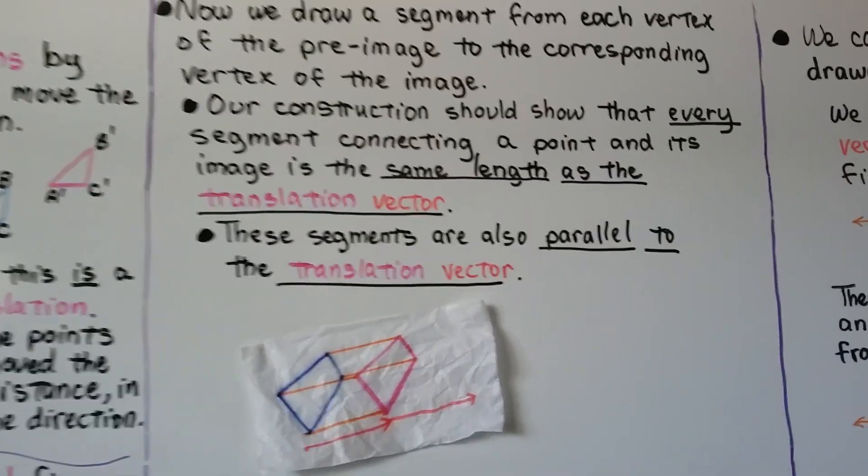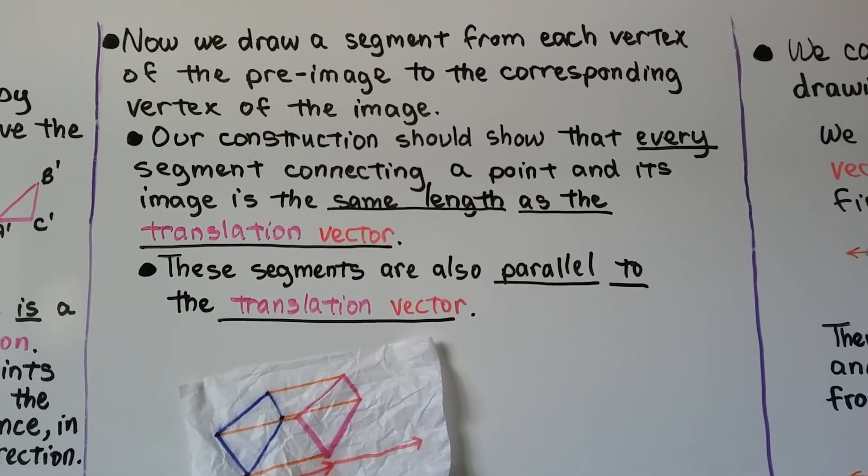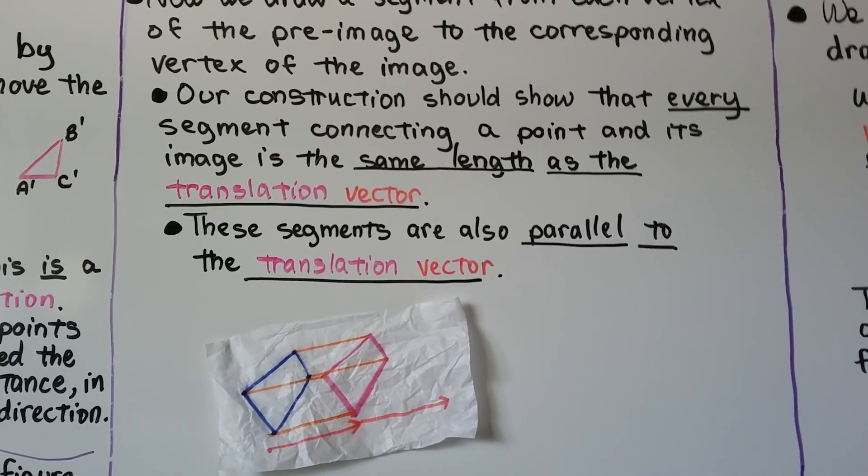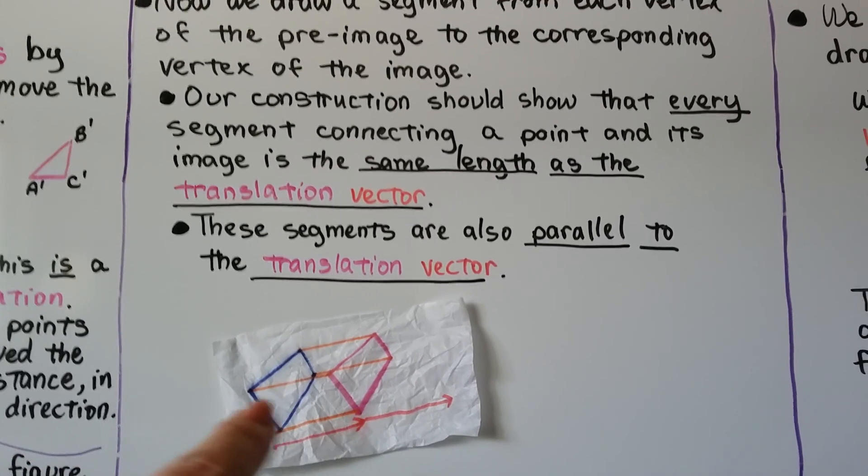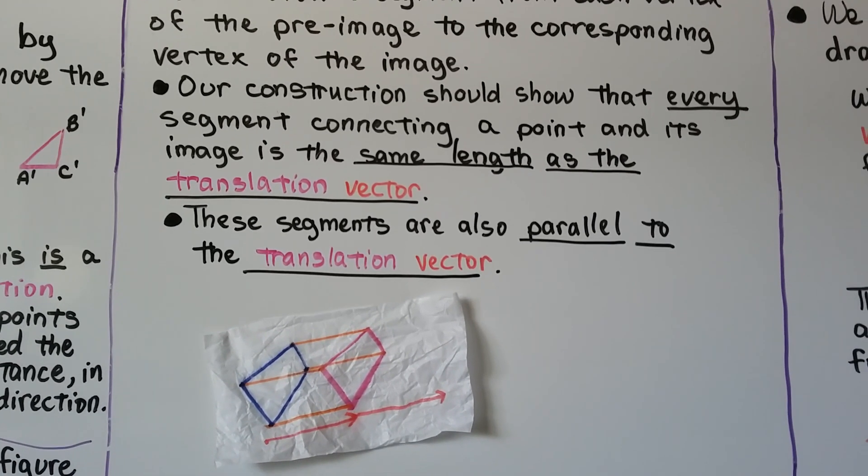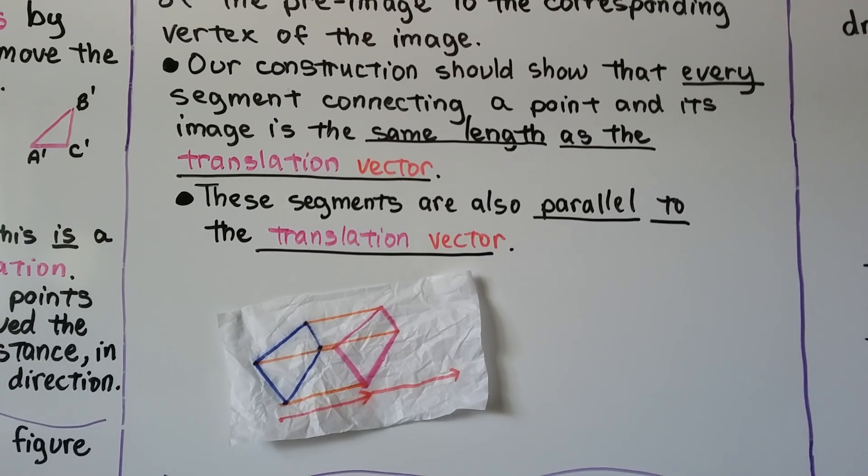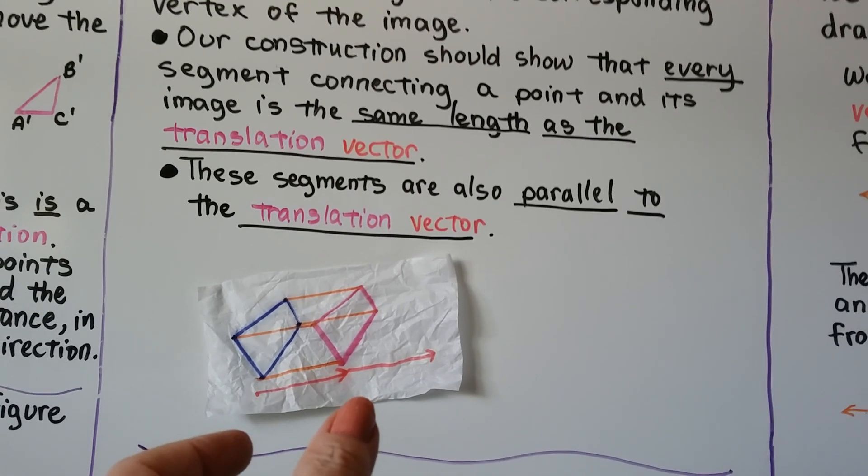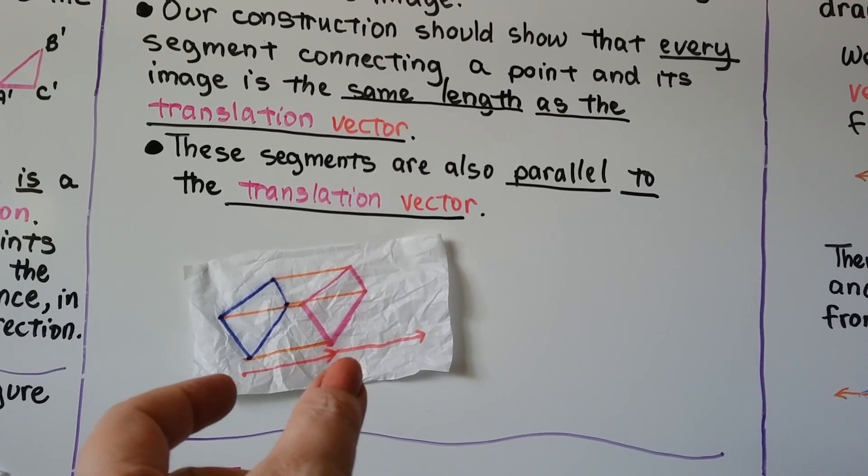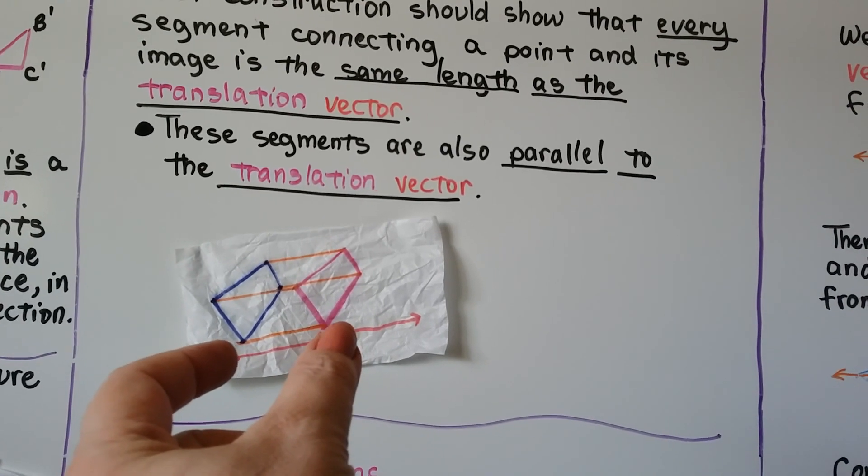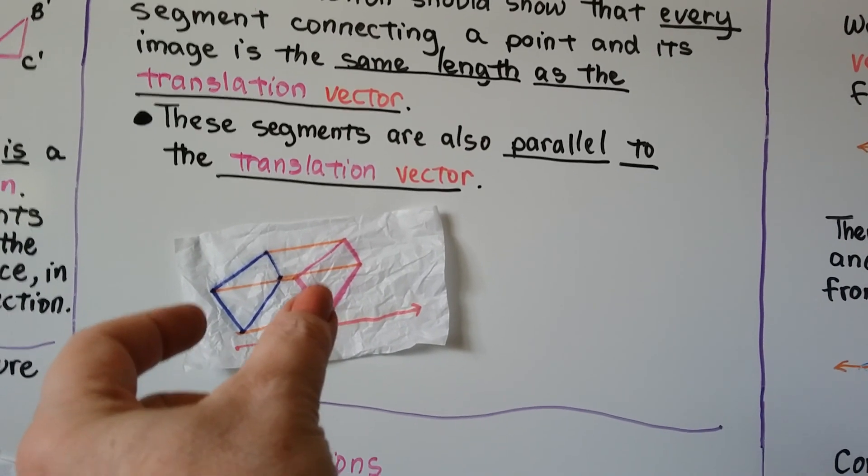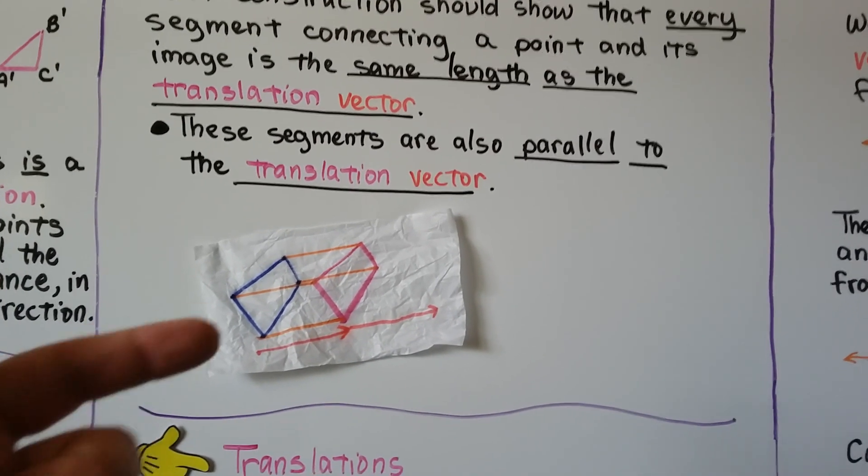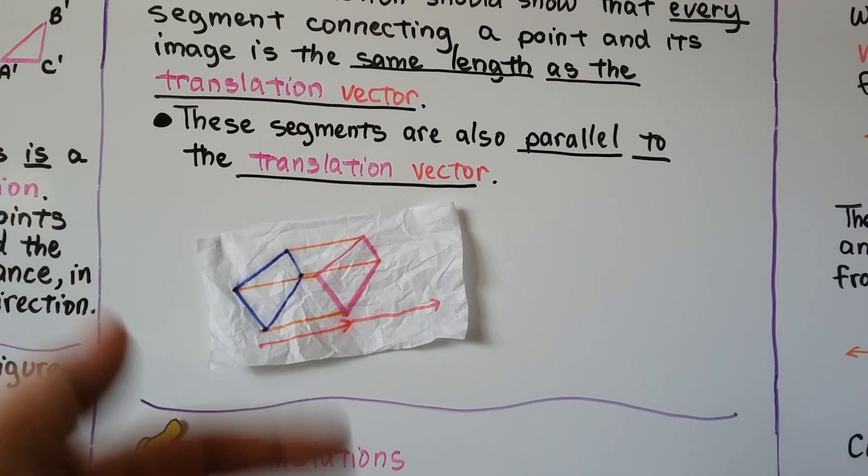Now we draw a segment from each vertex of the preimage to the corresponding vertex of the image. Our construction should show that every segment connecting a point and its image is the same length as the translation vector. If the translation vector is this long, then the segment between these two corresponding points is that long. And so is that one. And so is that one. The segments are also parallel to the translation vector. They're all parallel.